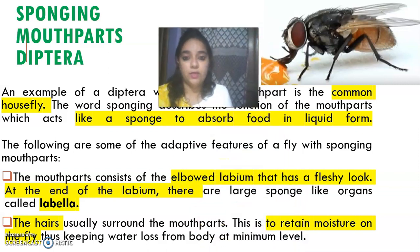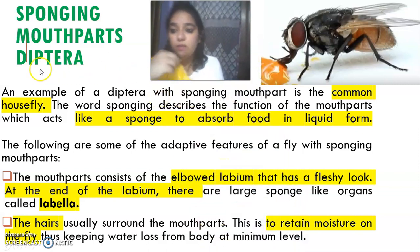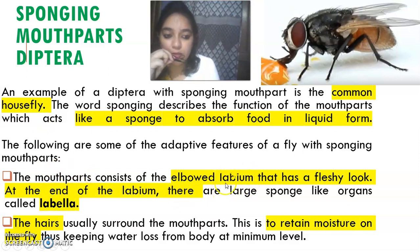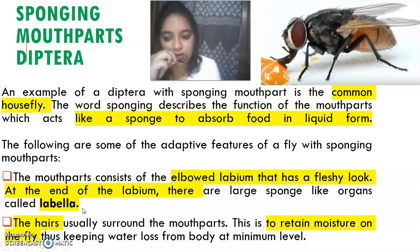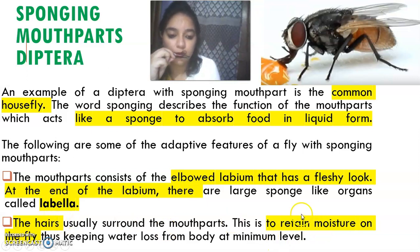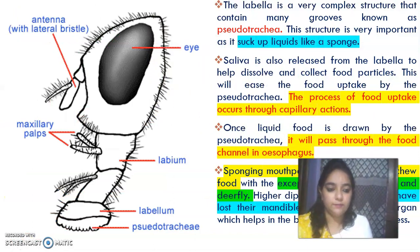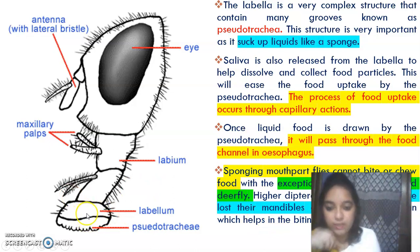Now let's talk about sponging mouthparts. Sponging mouthparts mean that solid food must be liquefied first. This is very common in the house fly. The modification is that the labium is fleshy, and at its end is a structure called labella which works like a sponge. Additionally, the mouthparts are covered with hairs whose function is to retain moisture. This is the sponging mouthpart structure.